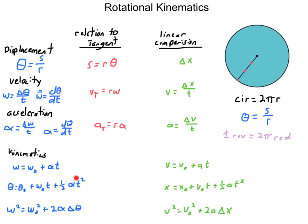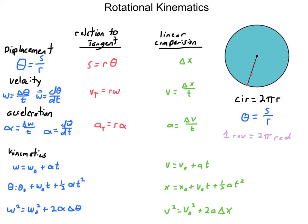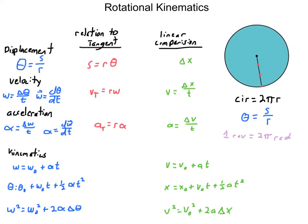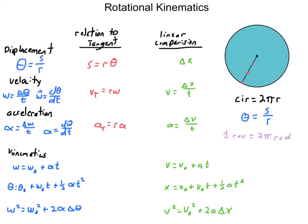Your kinematic equations are all the same too. Compare standard kinematics to the angular versions: velocity is replaced with angular velocity, initial velocity with initial angular velocity, and acceleration with angular acceleration. Time, of course, is the same regardless - there's no such thing as circular time. So every linear problem you've already done going backwards and forwards can also be done rotationally using all of these equations, solved the same way.